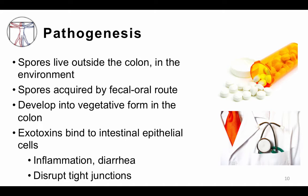All of the clinical manifestations are due to the toxins that this bug elaborates. They cause inflammation, diarrhea, and disrupt tight junctions in colonic epithelial cells. Toxin A activates neutrophils, which may in part help explain why C. diff is so commonly associated with leukocytosis. Toxin B is much more potent and responsible for many of the symptoms of severe disease.